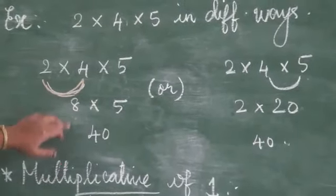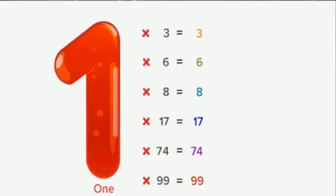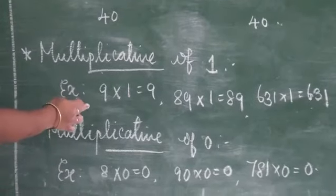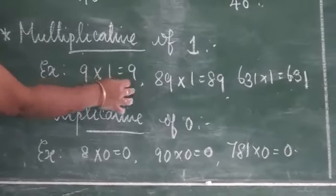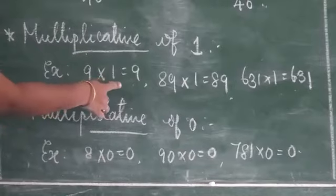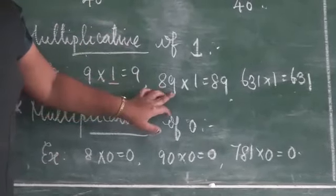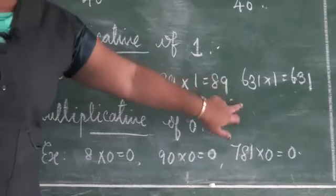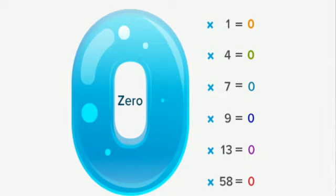Next is the multiplicative property of one. Example: 9 × 1 = 9. A number multiplied by one gives the same number. One more example: 89 × 1 = 89.